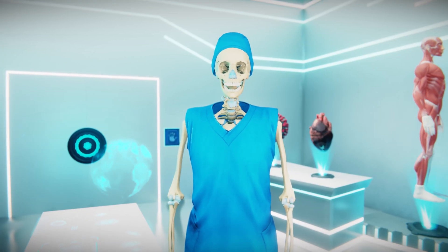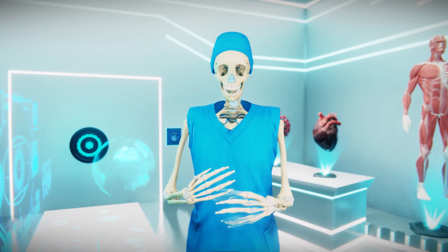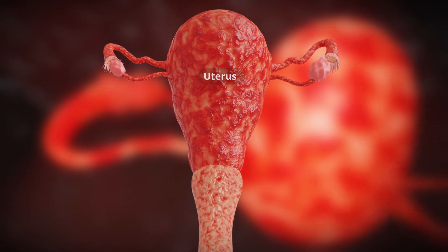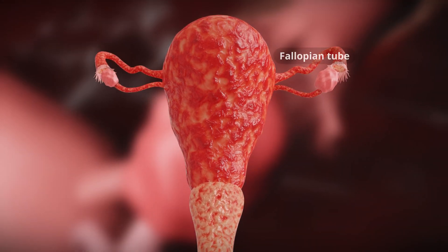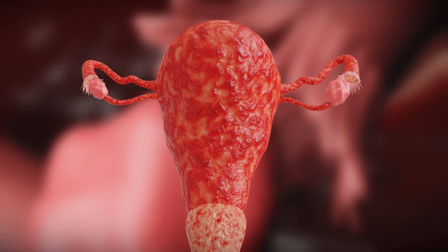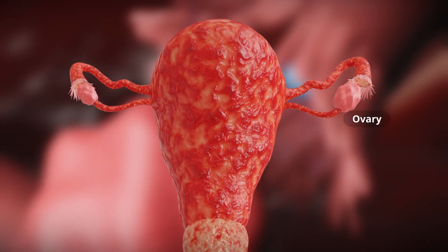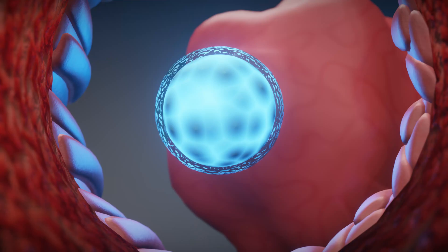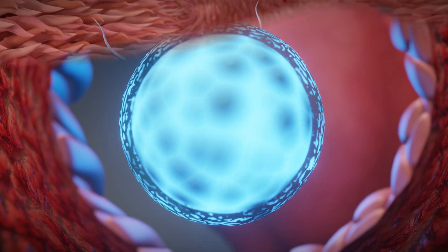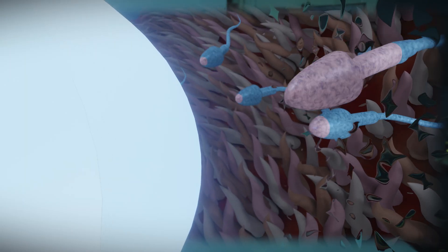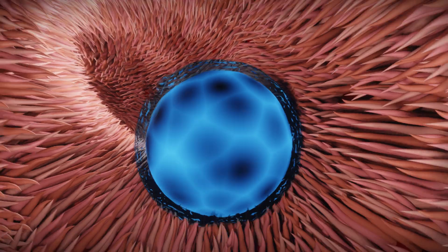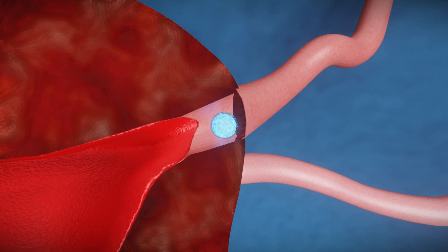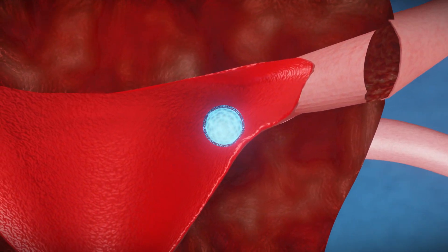Before explaining how twin babies are conceived, let me tell you about the female fertility system. There is a uterus, and on either side of the uterus there is a fallopian tube, also known as the ovator. At the end of the fallopian tube there is an ovary. Every month, each ovary produces an egg which enters the fallopian tube. If it meets with sperm, fertilization occurs; if not, the egg comes out into the uterus and the woman starts her periods.